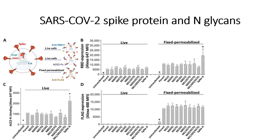In order to resolve this question, the strategy they approached is to transiently transfect the parent spike protein and the mutant spike protein within the HEK cells, and observe the expression of spike protein on the cell surface and also within the cells.